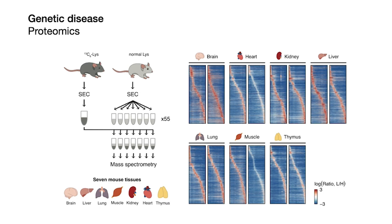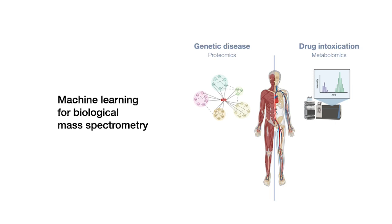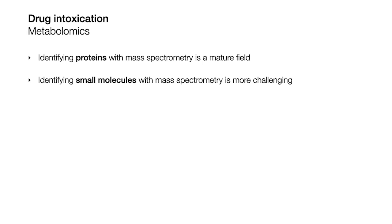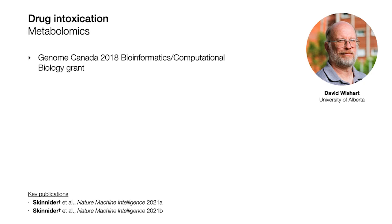This line of work provides a great example of how big biological datasets can be used to understand the pathogenesis of human disease. But I next wanted to go beyond this and use mass spectrometry data to actually diagnose disease. This led me to diagnosing acute drug intoxication using metabolomics. In the work I just described, we took it for granted that we'd be able to identify the proteins measured with mass spectrometry. But identifying small molecules measured with mass spectrometry is still a very challenging and unsolved problem, and I felt there was an opportunity to use artificial intelligence to solve it. So I teamed up with David Wishart at the University of Alberta to start developing chemical AI for metabolomics data.